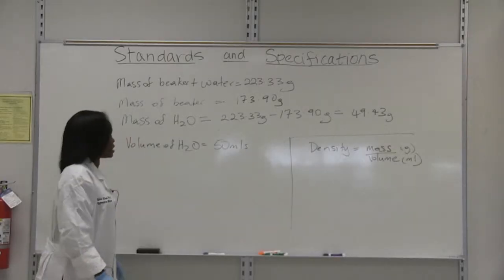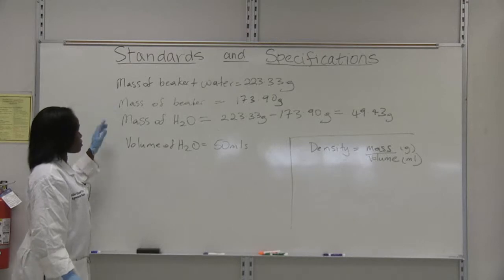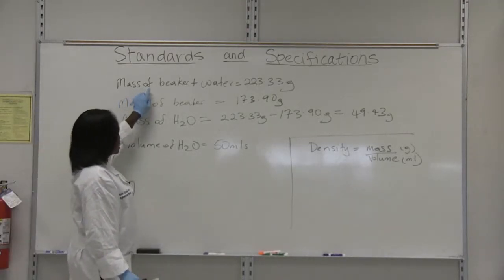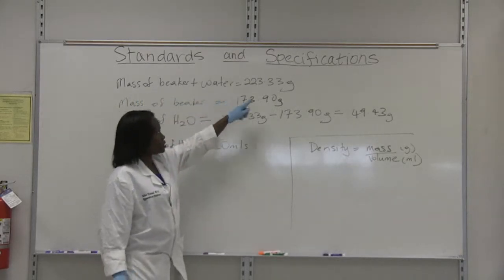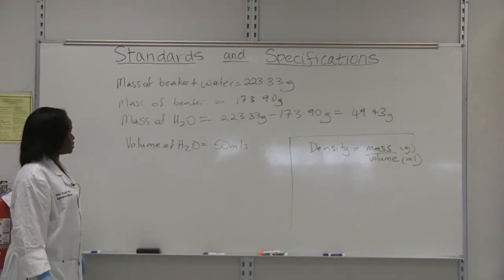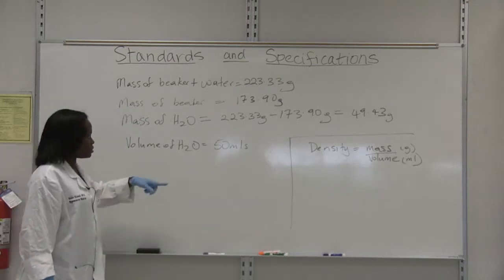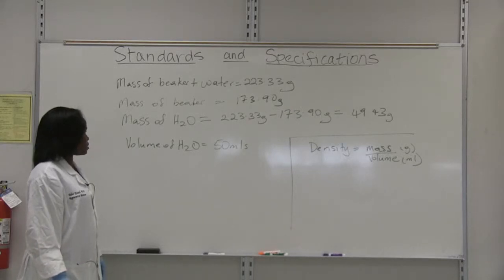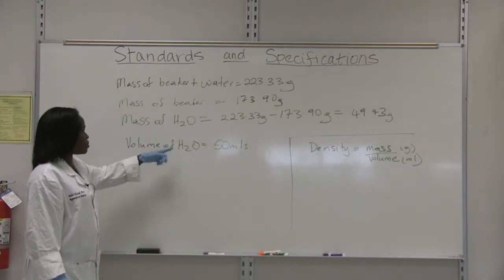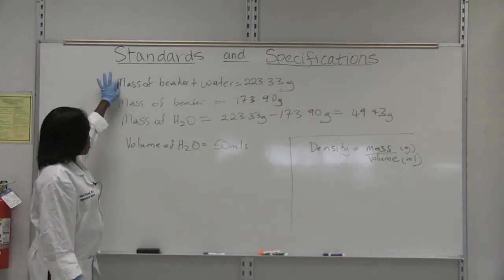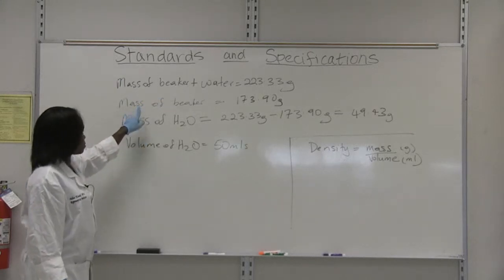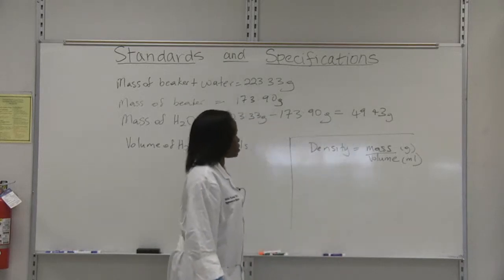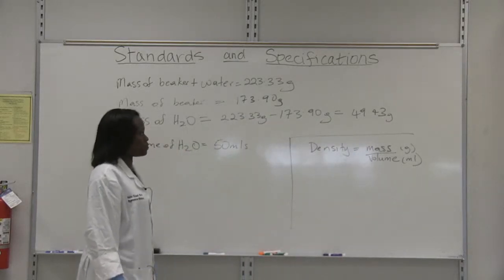Okay, so this is the data that we got from our measurement of the weight of water. The mass of the beaker plus the water was 223.33 grams. The mass of the beaker was 173.9 grams. So we can determine the mass of the water by subtracting mass of beaker plus water from mass of beaker. The mass of the water is therefore 49.43 grams.